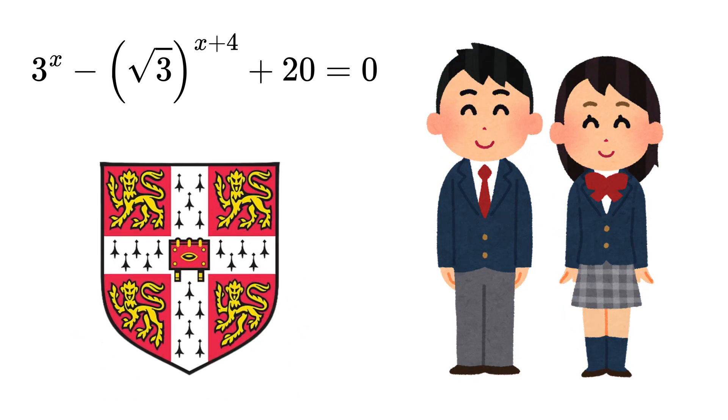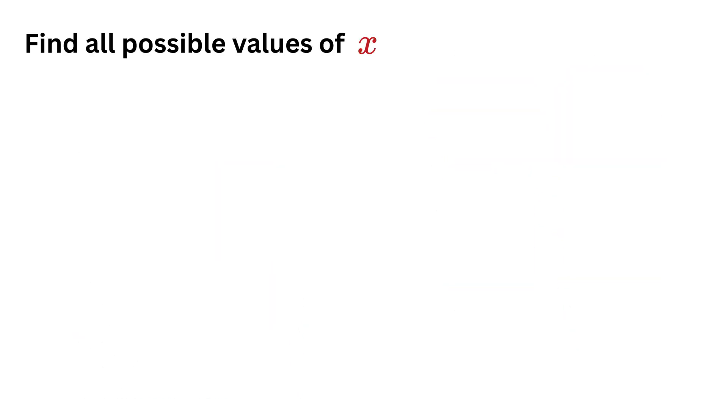Are you smart enough to get into Cambridge? Let us see. We need to find the value of x which satisfies the equation 3 raised to x minus root 3 raised to x plus 4 plus 20 equals 0.